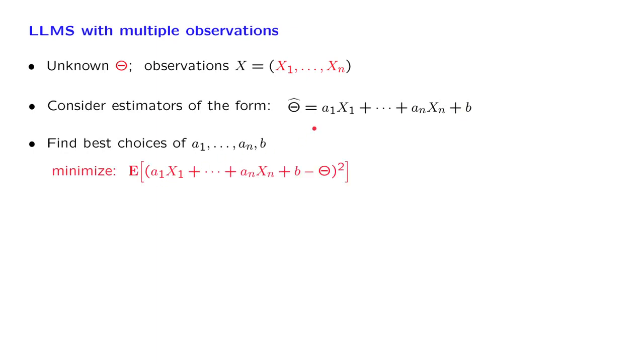It means that if we fix certain choices, we obtain an estimator. We look at the difference between the estimator and the quantity we're trying to estimate, take the square and then take the expectation. So once more, we're looking at the mean squared error of our estimator, and we try to make it as small as possible.